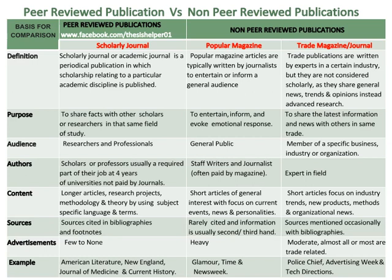The content of scholarly journals consists of longer articles, research projects, methodology and theory, using subject-specific language and terms. The content of popular magazine articles consists of short articles of general interest with a focus on current events, news and personalities.